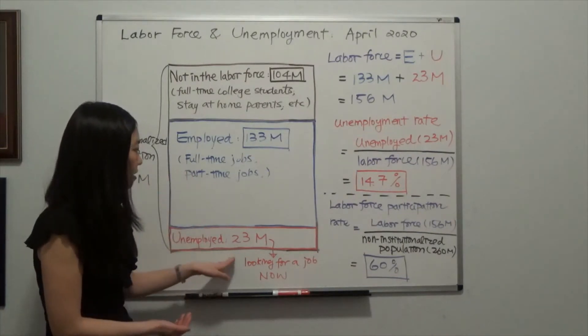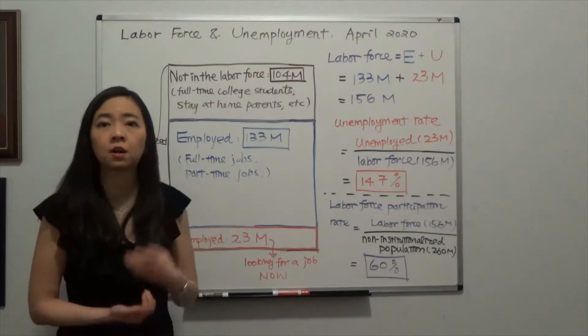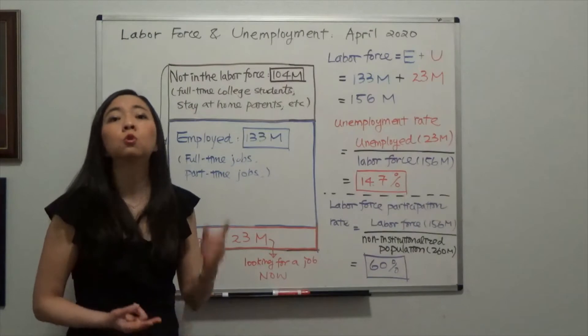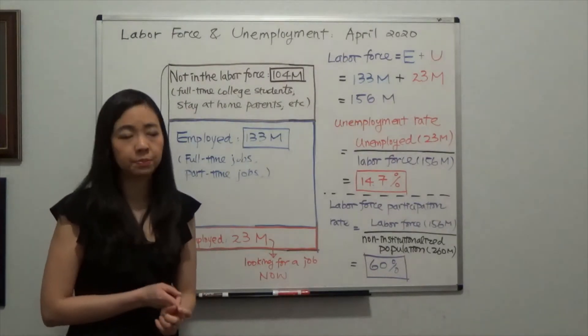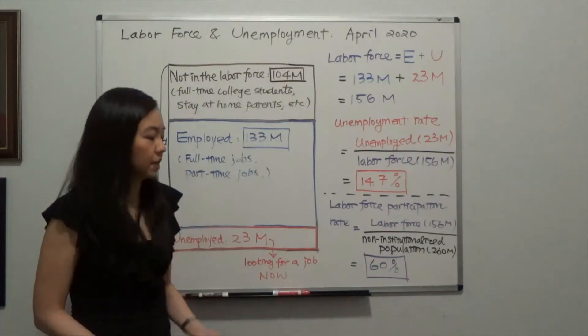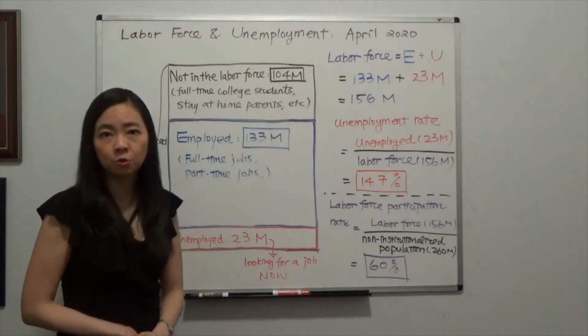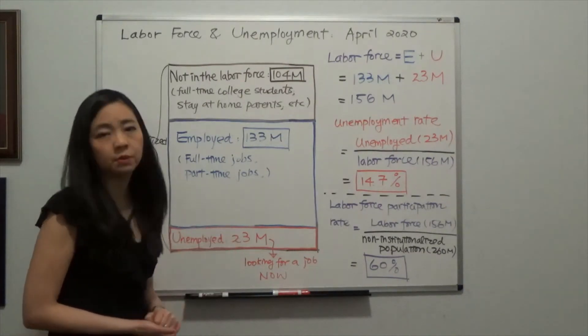Next, there are 23 million people who are unemployed. This means you want to work and are actively looking for a job, but you don't have a job. To be counted as unemployed, you must be actively looking for a job. There are 23 million of them.